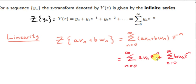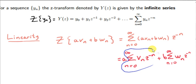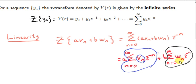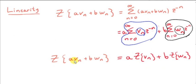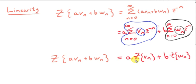The a and b are constants, so we can pull those through the summation sign. Notice what we get: this summation here is none other than the definition of the Z-transform of the sequence vn. Similarly, this sum here is the definition of the Z-transform of the sequence wn. So to get the Z-transform of a linear combination of sequences, we can just distribute it in, so that we get the same linear combination of the Z-transforms of the two sequences vn and wn.